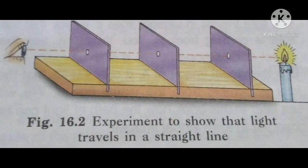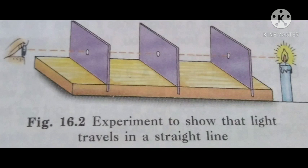There is one more activity which shows rectilinear propagation of light. For this activity, we take three square pieces of cardboard and make them stand straight on a table using wooden supports. We have to make holes in them at exactly the same level. We keep a burning candle on the table with its flame at the level of the holes, and adjust the cardboards such that we can see the candle flame through the holes. We find that the flame can only be seen when the holes are exactly in a straight line. If we disturb one of the cardboards, we are not able to see the candle flame. So these two experiments verify the rectilinear propagation of light.